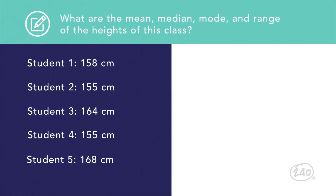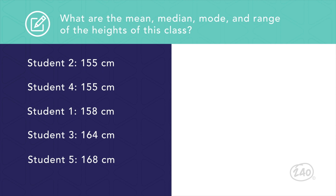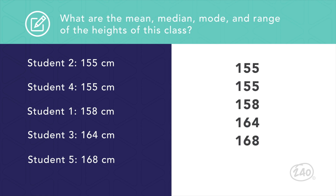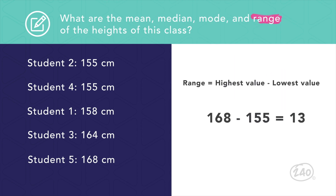Let's look at an example. Five students have their heights measured. The data set is 158, 155, 164, 155, and 168 centimeters. We want to find the mean, median, mode, and range. First, rearrange the data from least to greatest: 155, 155, 158, 164, 168. To calculate the mean, add these numbers to get 800, then divide by 5 — giving a mean of 160. The median, the middle number, is 158. The mode, the most frequent number, is 155. The range is 168 minus 155, which equals 13.